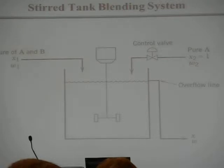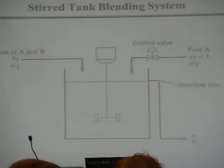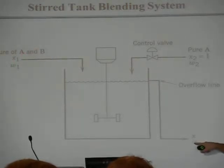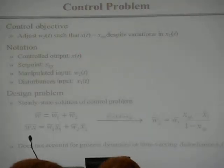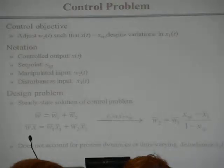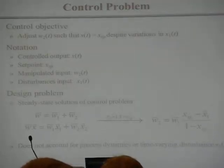Sounds pretty simple, right? The challenge is that this system has dynamics. You know what a residence time of a process is — it would be the volume of this reactor divided by the mass flow, like the residence time in the system. When the inlet composition changes, you see that reflected in the outlet composition slowly, because it's mixed. So here's some notation: the thing we want to control to a set point is called the controlled output. The thing we adjust is called the manipulated input — in this case, the flow of that pure A stream. Something changing that we have no control over is called a disturbance input, like the composition of stream 1.